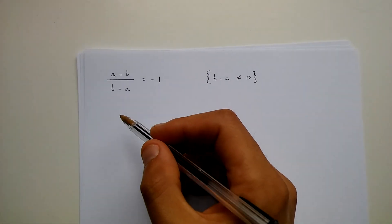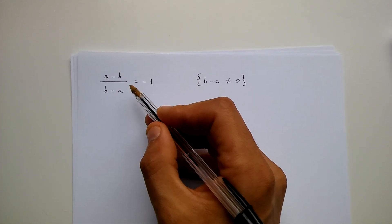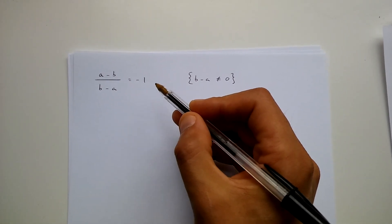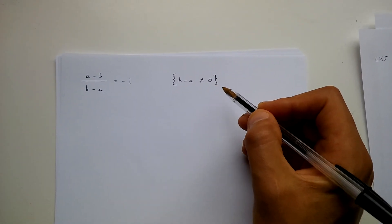Hello, in this video I'm going to show you how to prove that a minus b over b minus a is equal to minus 1 when b minus a is not equal to 0.